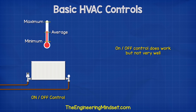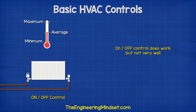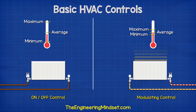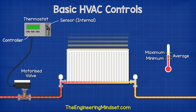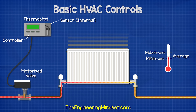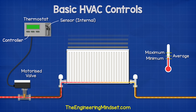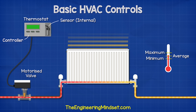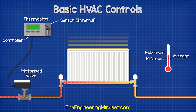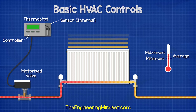Turning systems or components on and off to regulate the room temperature does work, but not very well. Instead, we can modulate the thermal output by increasing and decreasing the temperature to match the actual load. For example, in this simple heating system, we have a thermostat in the room to measure the temperature, and then a controller will compare this to the desired set point temperature and decide if the room is too hot, too cold, or just right. If it is too cold or too hot, the controller alters the position of the motorized valve to increase or decrease the amount of hot water entering the radiator.